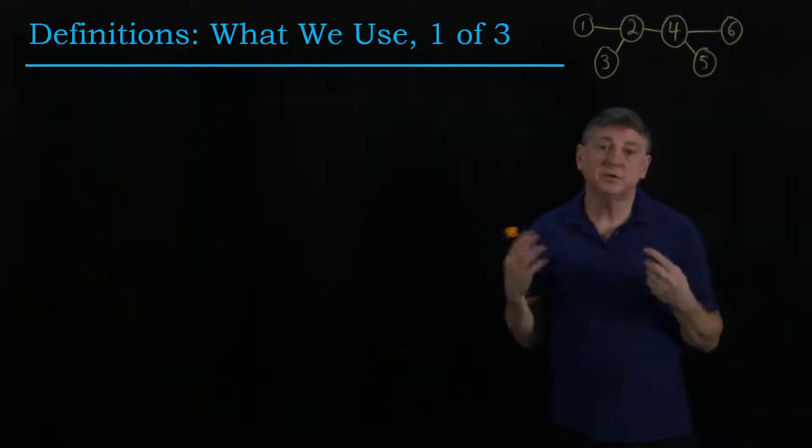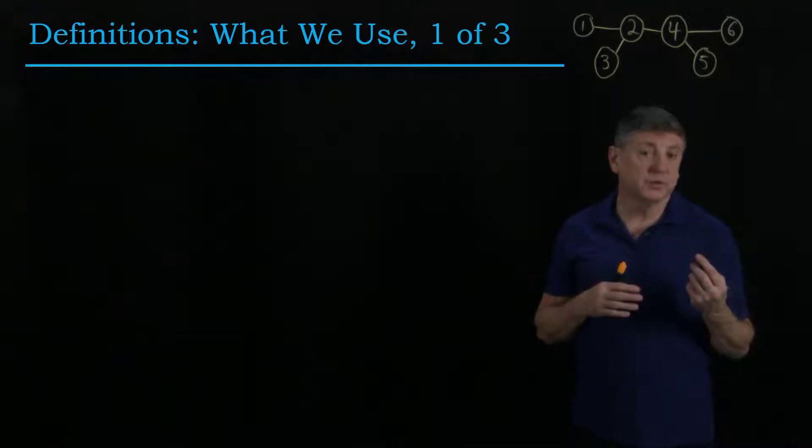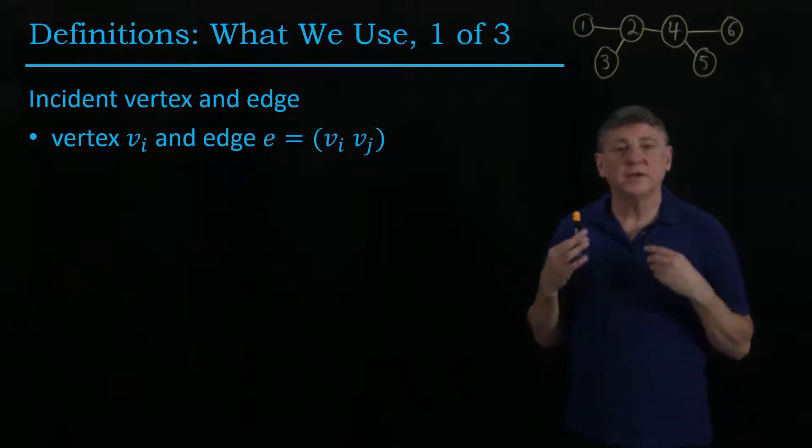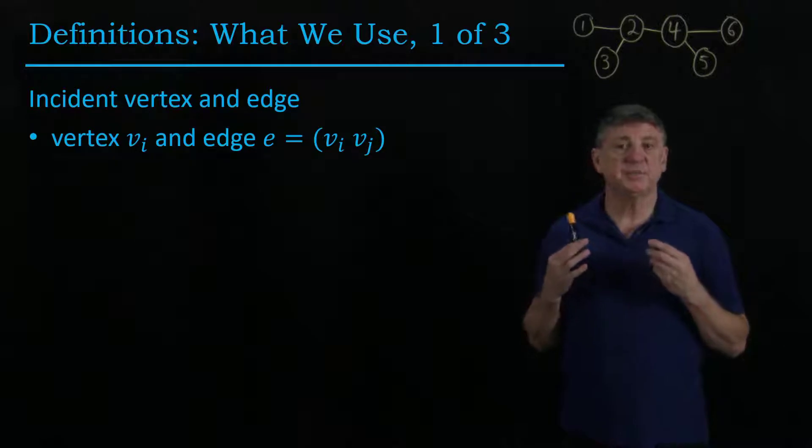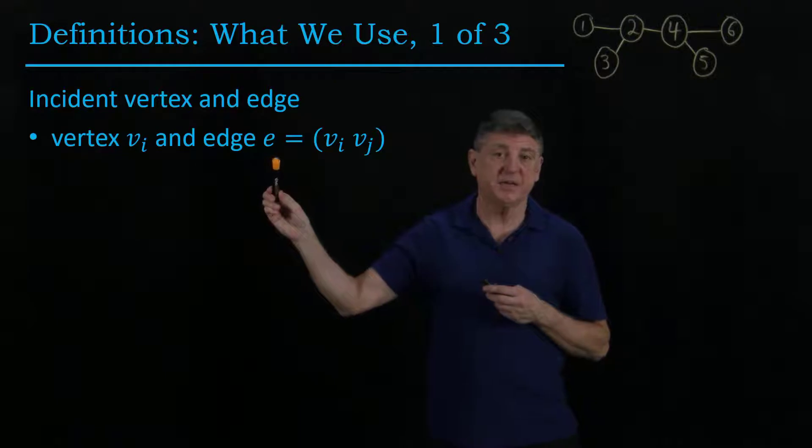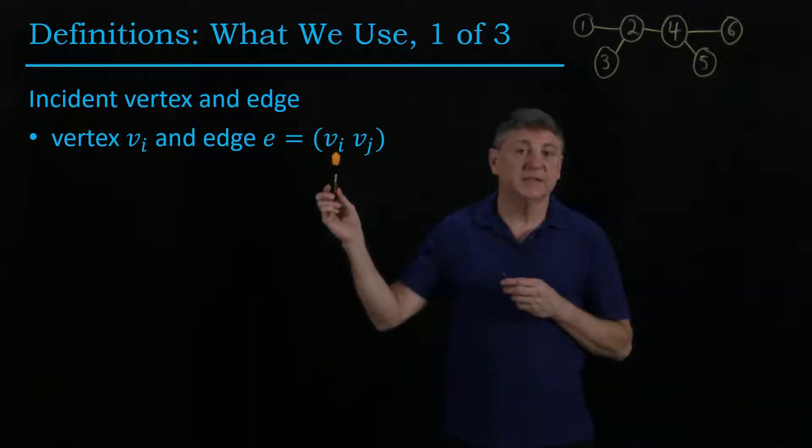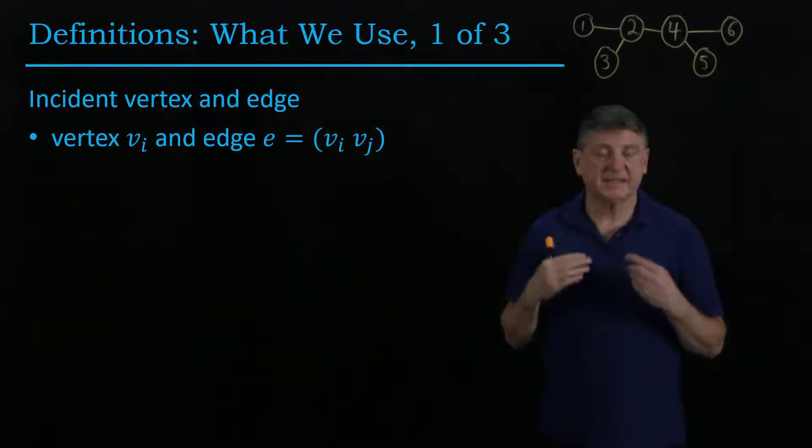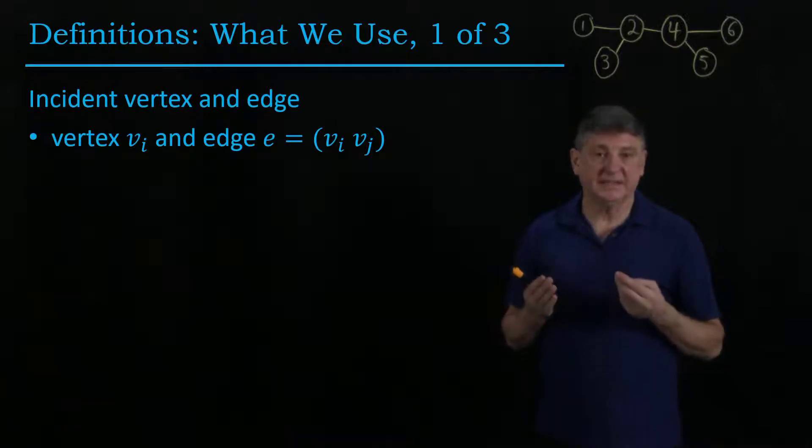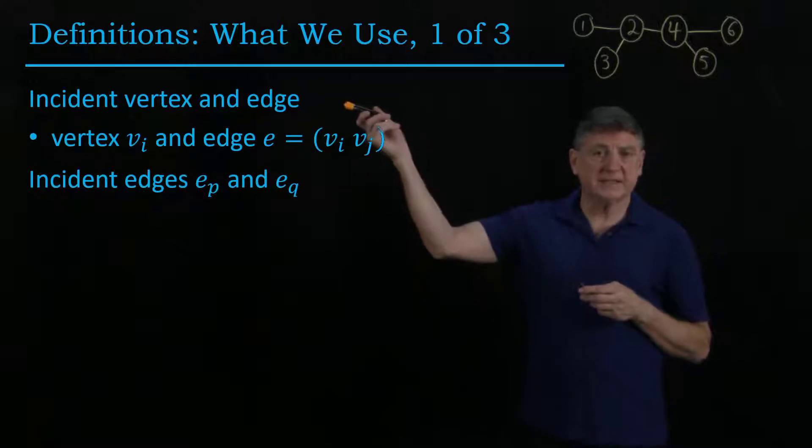Now, there will be two kinds of definitions that we'll go through here. There are the ones that we'll use, and there are the ones that we won't use. The ones that we'll use begin with what does it mean for a vertex and edge to be incident? What it means is that if we have vertex i and we have any edge, then vertex i is in the edge. So rather than saying vertex is in the edge, graph theory says the vertex and edge are incident.